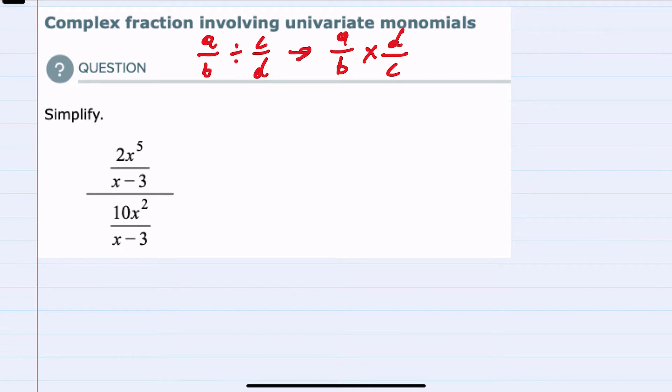Applying that here, our first fraction would stay the same, 2x to the fifth over x minus 3. We would turn division into multiplication by taking the reciprocal of the second fraction.